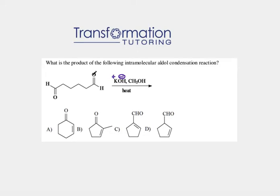I could look at either C=O double bond. If I look at this one and highlight it, the carbon that is next to the C=O is called the alpha carbon, and the hydrogens it has are called alpha hydrogens. My base will take this alpha hydrogen and put a minus charge right here on the alpha carbon.